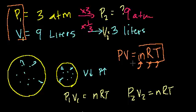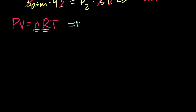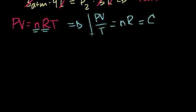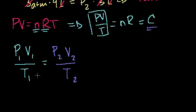That's a useful thing to know in general: if temperature is held constant, pressure times volume is going to be a constant. You can take that even further. If we look at PV equals nRT, the two things that don't change in the vast majority of exercises are the number of molecules and R. So if we divide both sides by T, we get PV over T equals nR, which is a constant for any system where we're not changing the number of molecules. So P1V1 over T1 equals P2V2 over T2.